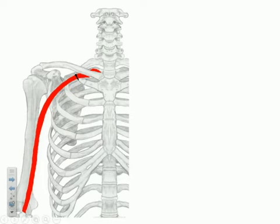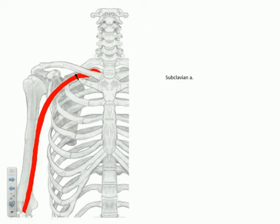Before we look at the axillary artery itself, there are a couple of branches off the subclavian that we want to discuss. These are not something we're really going to be able to see in lab this time unless you really dig deep. They will come up again during the head and neck unit, but we have touched on a couple of these arteries, so just to show where they're coming from.